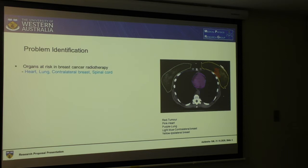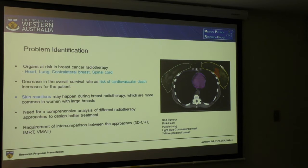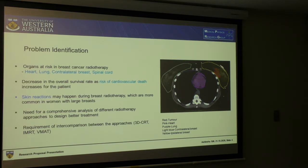If you look at the image on the right, the red is the tumour, the pink is the heart, the purple is the lung, yellow is the ipsilateral breast, and light blue is the contralateral breast. As you can see, the lung and the heart are really near the tumour. When we are irradiating with radiation, it's highly likely they would receive a decent amount of radiation, so there is an increased risk of cardiovascular death. We have reduced the local recurrence rate, but because there is an increase in cardiovascular death, the overall survival is compromised.